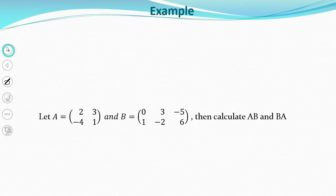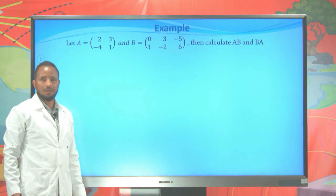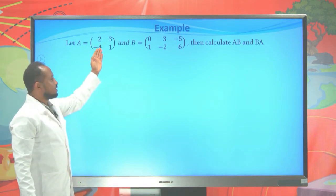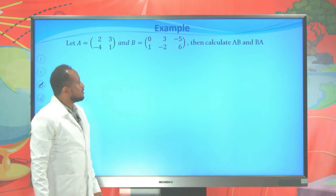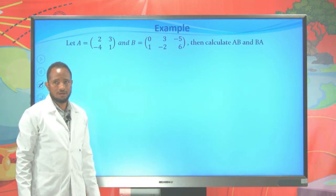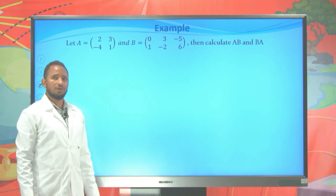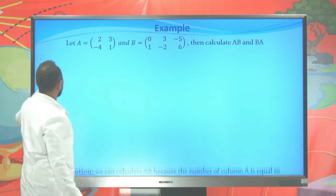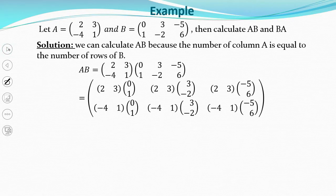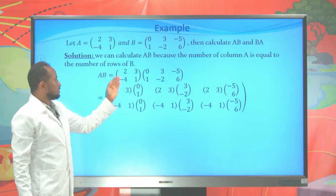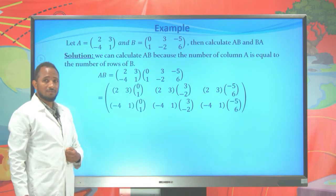Now let's see a concrete example. Let matrix A be [2, 3; -4, 1] and matrix B be [0, 3, -5; 1, -2, 6]. We are asked to calculate A times B and B times A. To find A times B, we check: matrix A has two columns and matrix B has two rows, so the columns of A equal the rows of B. Therefore, we can multiply A and B.